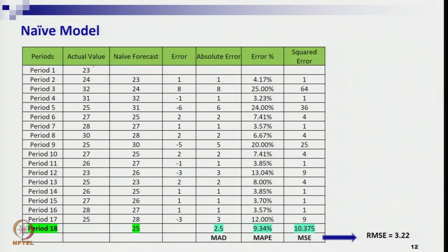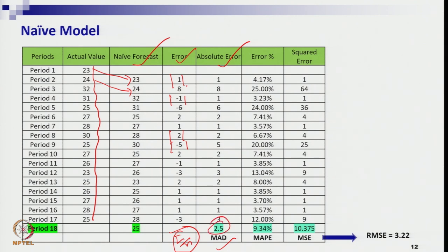We are bringing the Naïve model just to illustrate the concepts and calculate the four methods of accuracy. Look at the data: for this time series sample data, we used the Naïve forecast — whatever happened in the past is the forecast for the next period. We then calculated the error in the right-hand column.